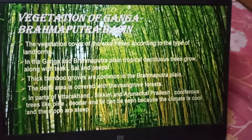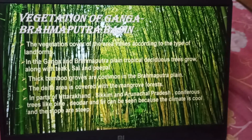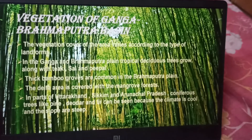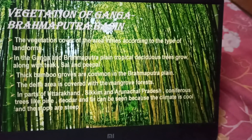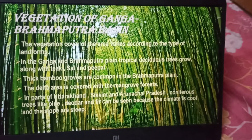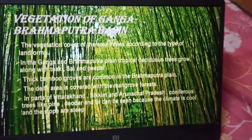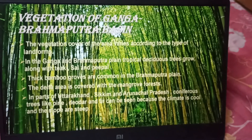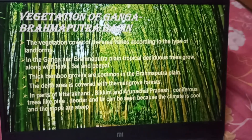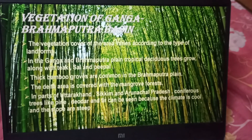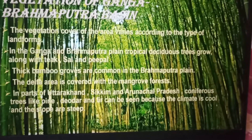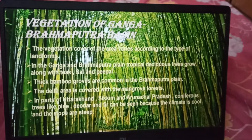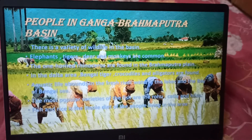Vegetation of Ganga Brahmaputra Basin. The vegetation cover of the area varies according to the type of landforms. In the Ganga and Brahmaputra plain, tropical deciduous trees grow along with thick sal and peepal. Thick bamboo groves are common in the Brahmaputra plain. The delta area is covered with mangrove forest. In parts of Uttarakhand, Sikkim, and Arunachal Pradesh, conifers like pine, deodar and fir can be seen because the climate is cool.